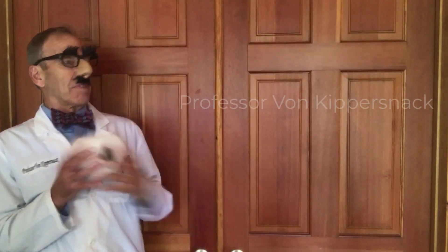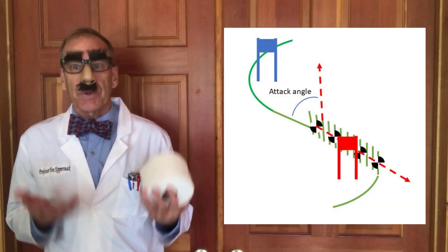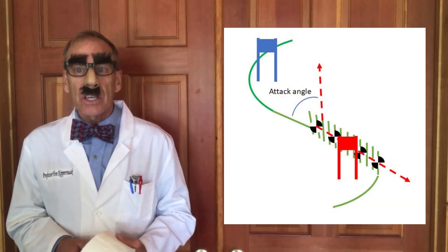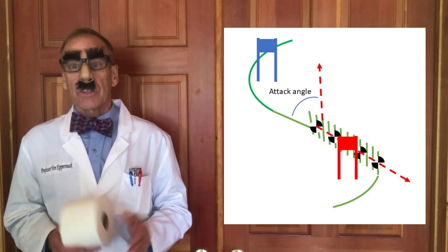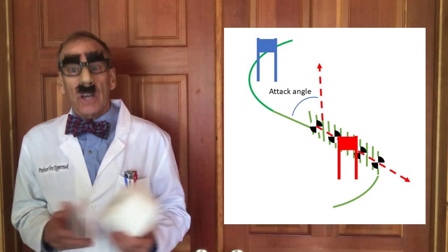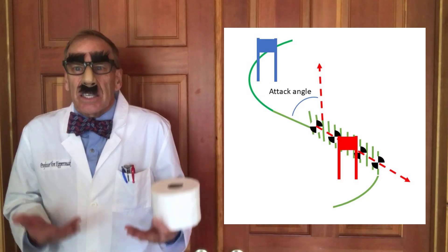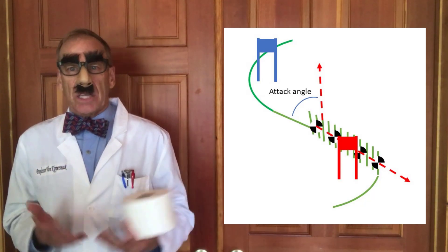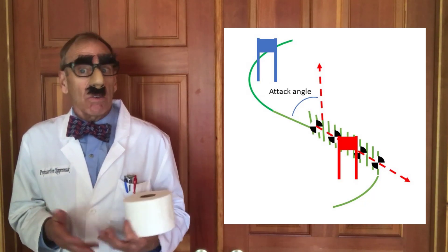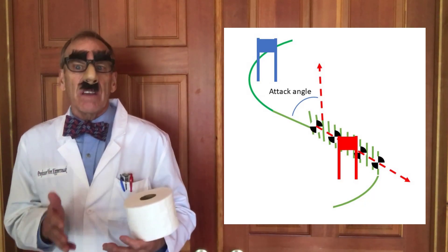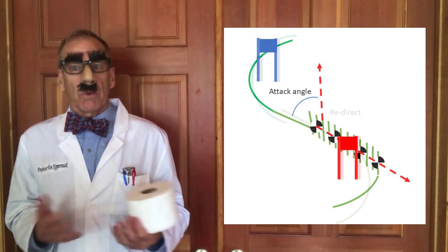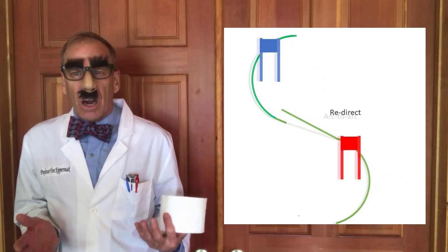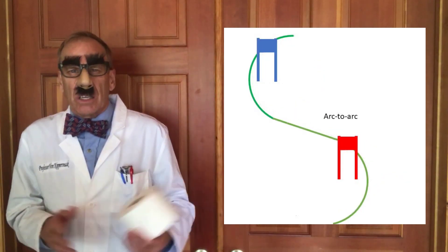The biggest difference between the two is the attack angle — the angle between the skier's longitudinal axis and the path of the skier's center of mass. In other words, how sideways is the skier going? In the stivit, the skier has a big attack angle, which tells us he or she is going very, very sideways. In the redirect, not so much. And in the arc to arc, not at all.